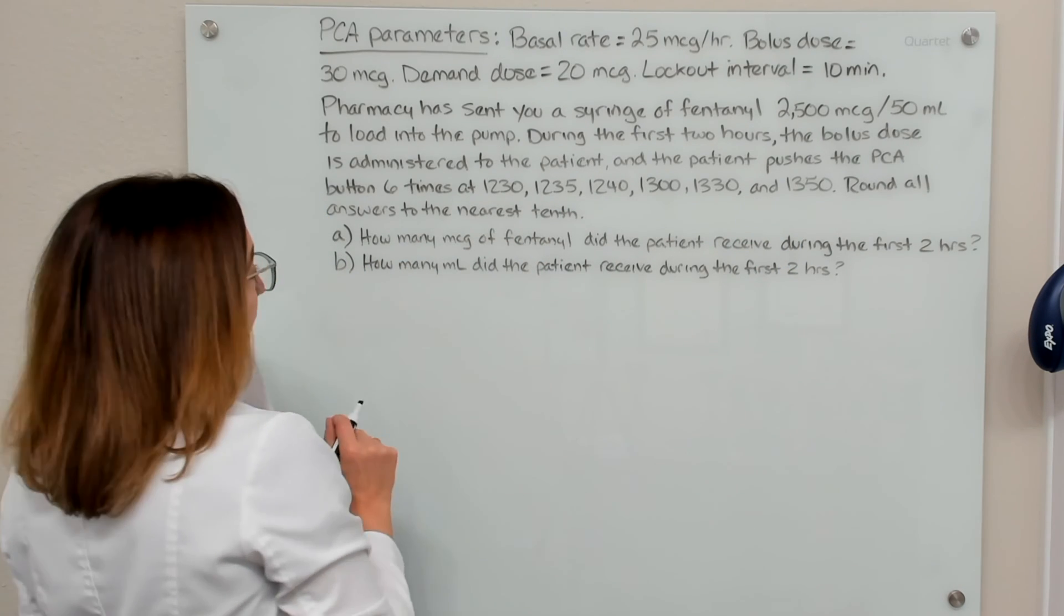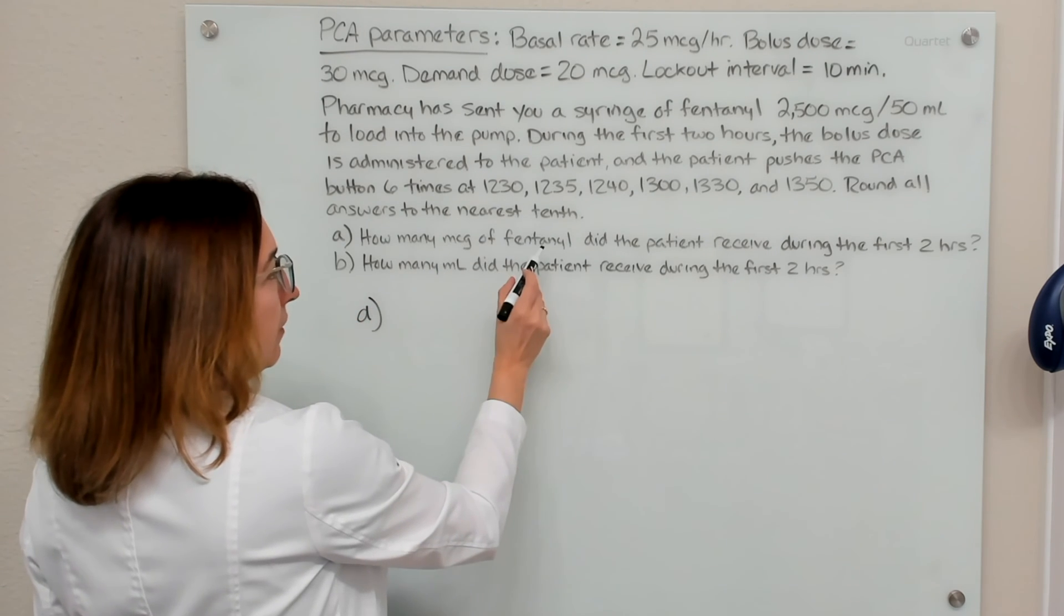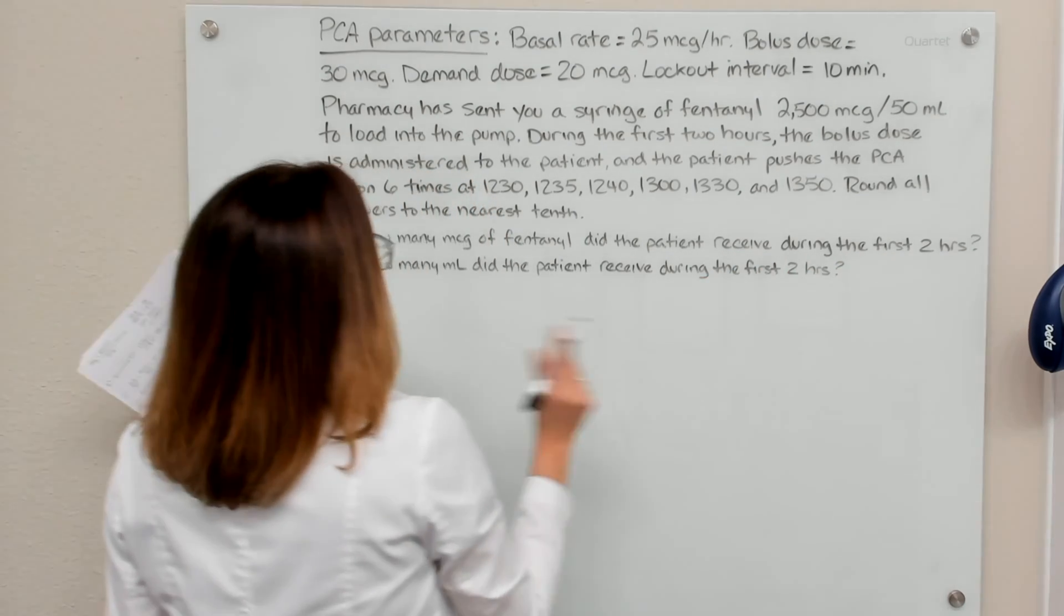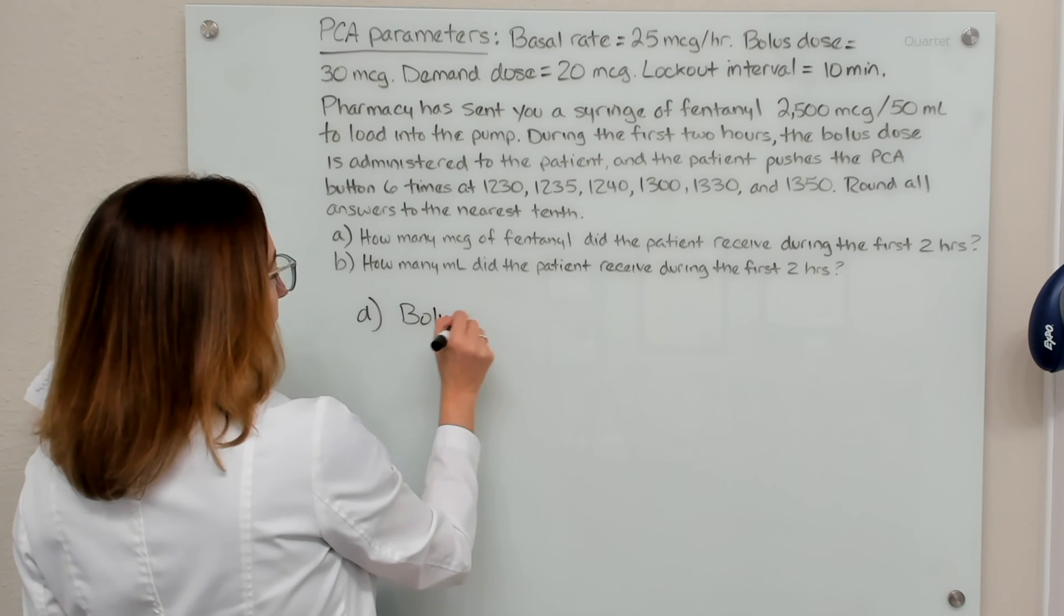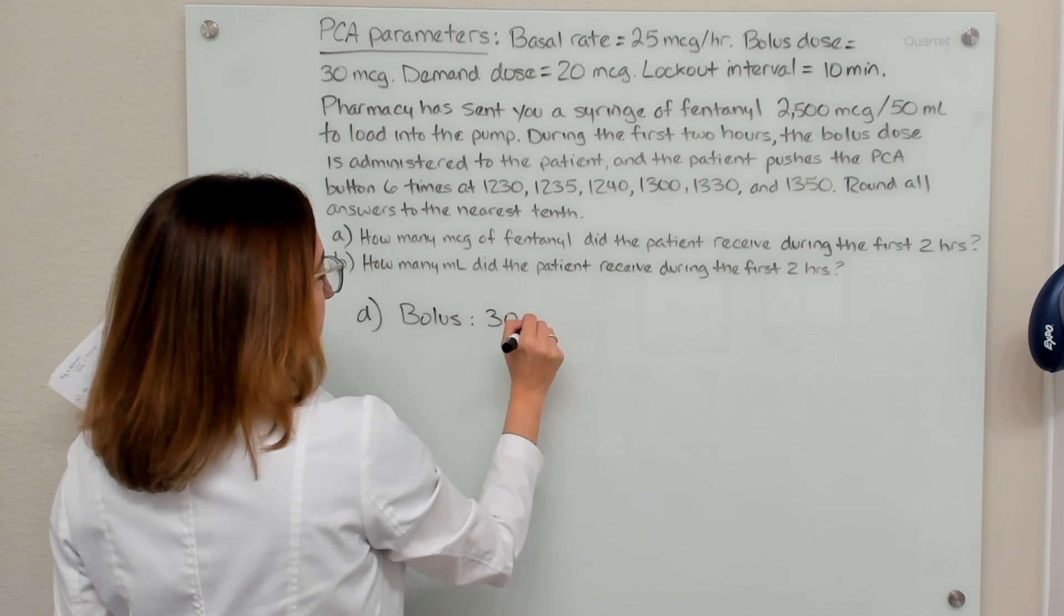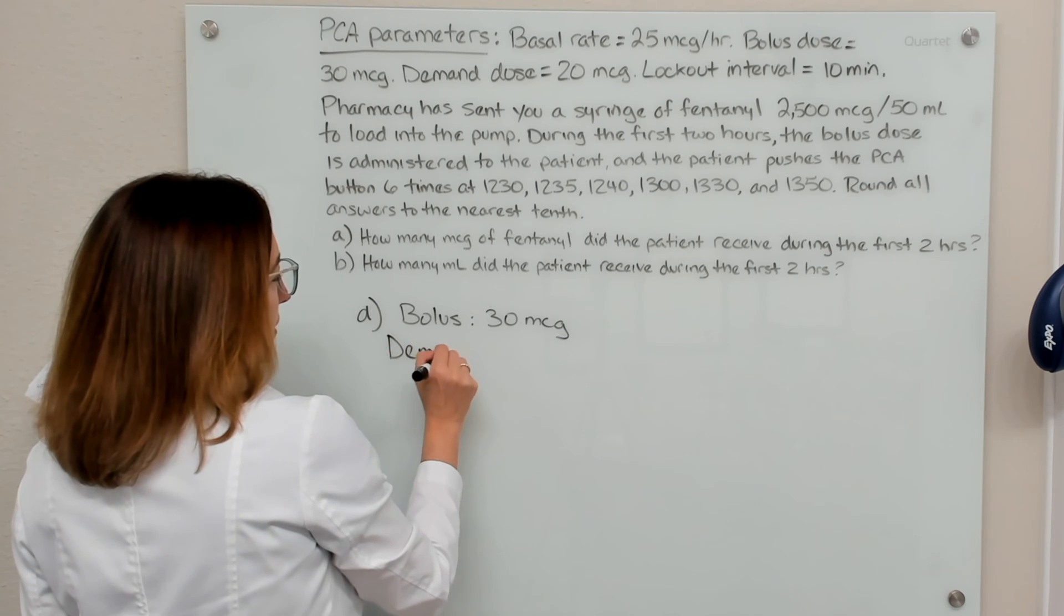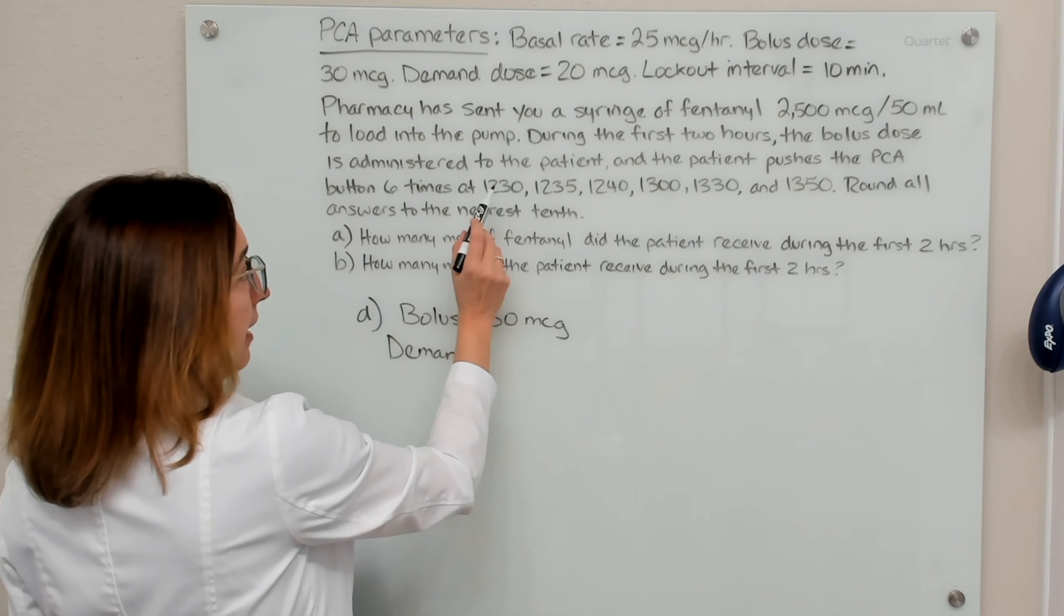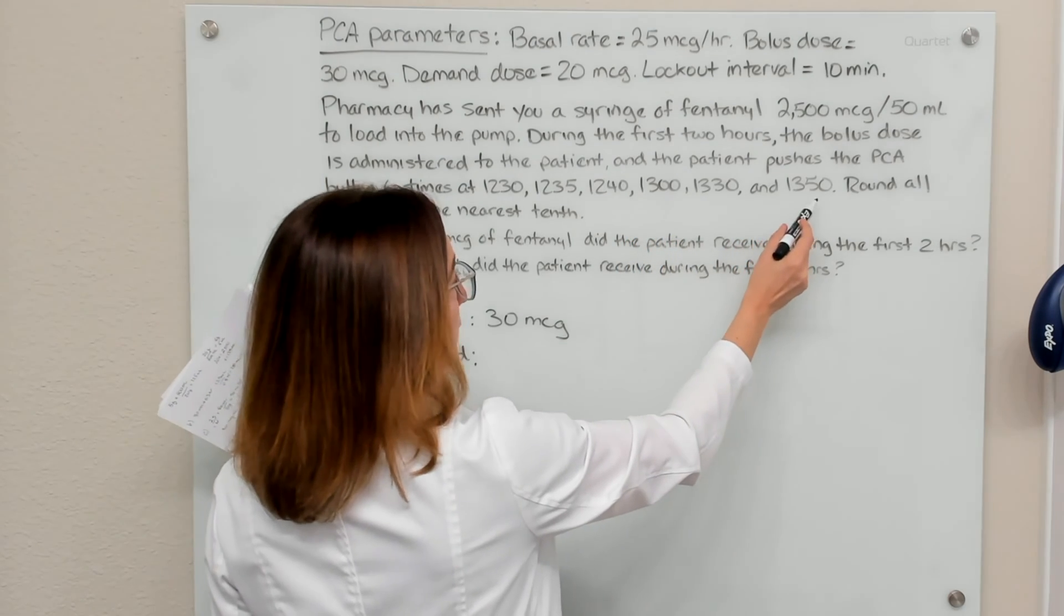In part A, we are being asked how many micrograms of fentanyl did the patient receive during the first two hours? So let's break this down. They got their bolus dose, which was 30 micrograms. Then they got their demand doses. They pushed the button six times at 12:30, 12:35, 12:40, 1:00, 1:30, and 1:50.